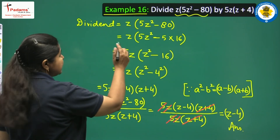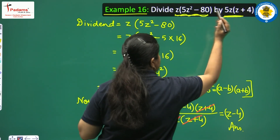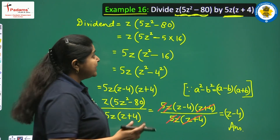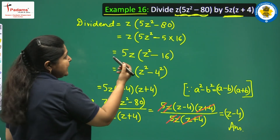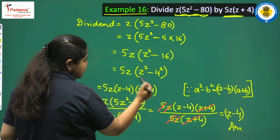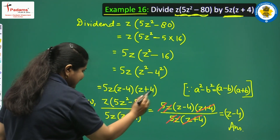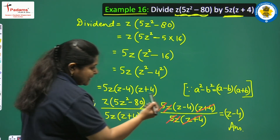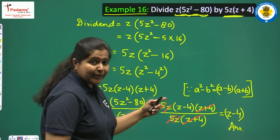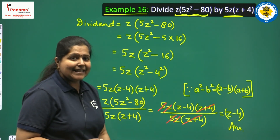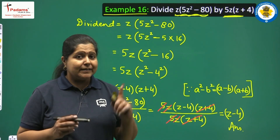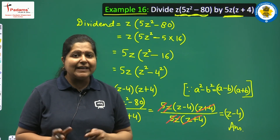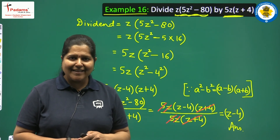The method: first simplify the dividend, simplify the divisor if not in factor form, cancel common factors in numerator and denominator to get the answer. In this way we divide any two given algebraic expressions. Concepts related to monomials and polynomials are clear. You can now try questions from exercise 14.3. Bye for now.